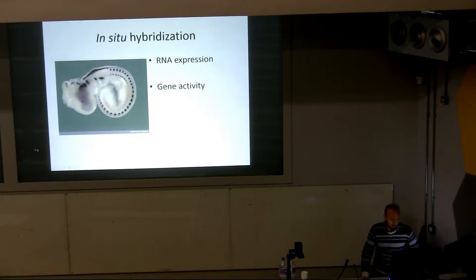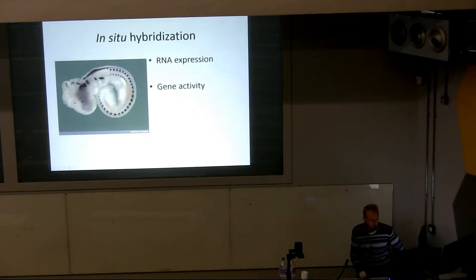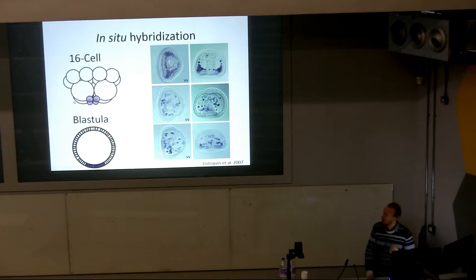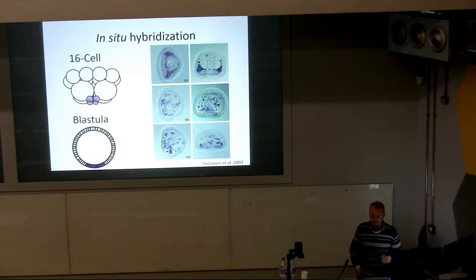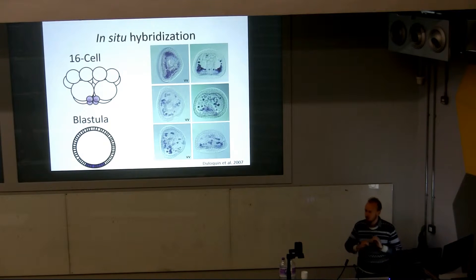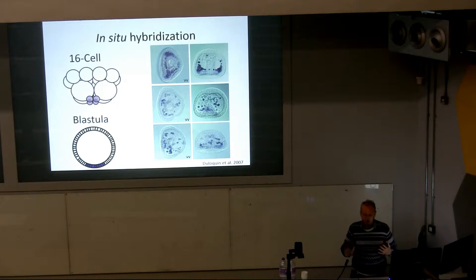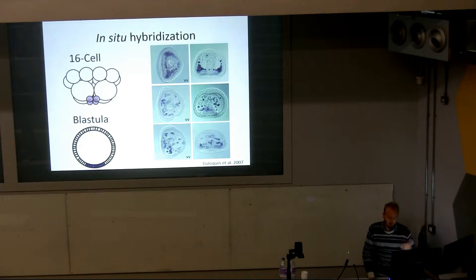I need to talk a little bit about in-situ hybridization. This is a way we're able to localize where the expression of a gene is occurring by looking at the RNA that is encoded from that gene. Essentially, where you see the purple—and this will be the case throughout the talk—the purple is where the gene is expressed. I'm going to be using some gene names today; don't worry about them—the more important thing is what the gene does.